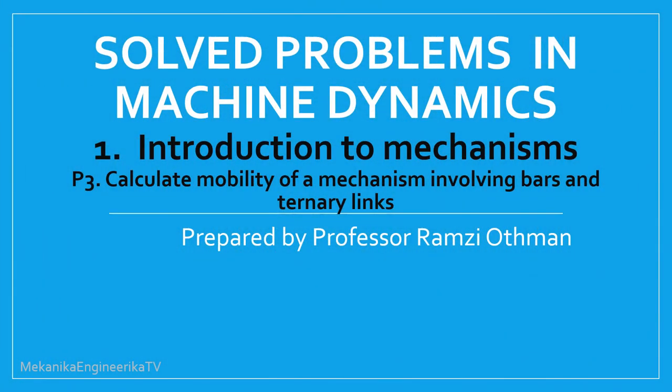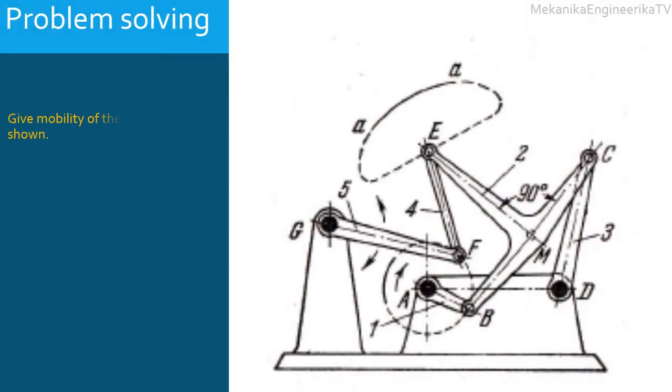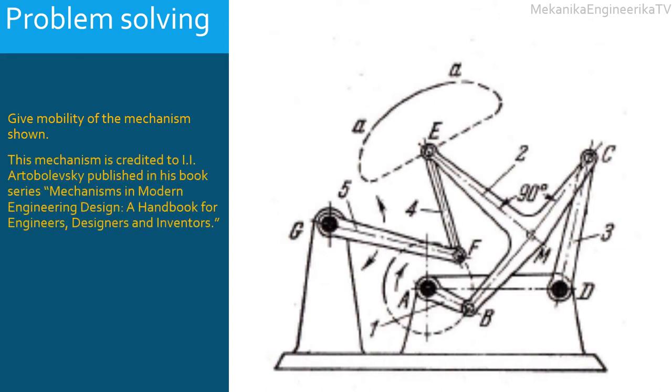This video is part of a series presenting solutions of problems related to machine dynamics. This video presents the determination of mobility of a mechanism involving several bars or binary links and some ternary links. The problem asks to determine the mobility of the mechanism shown here, taken from the book series Mechanisms in Modern Engineering Design by Ivan Ivanovich Ardobolevsky.